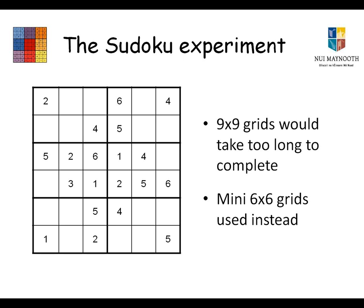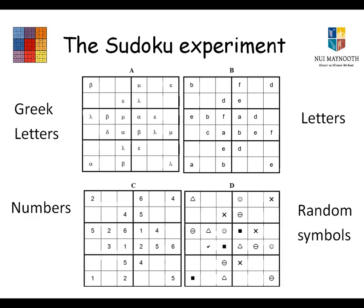The factor manipulated in the experiment was the type of Sudoku puzzle. There were four different types: numbers, letters, Greek letters, and random symbols. These are in fact the exact same puzzle — just with different characteristics depending on which type you're dealing with. For example, the number one in the numbers version is equivalent to the letter A in the letters version, alpha in the Greek letters version, and a filled-in black square in the random symbols version.